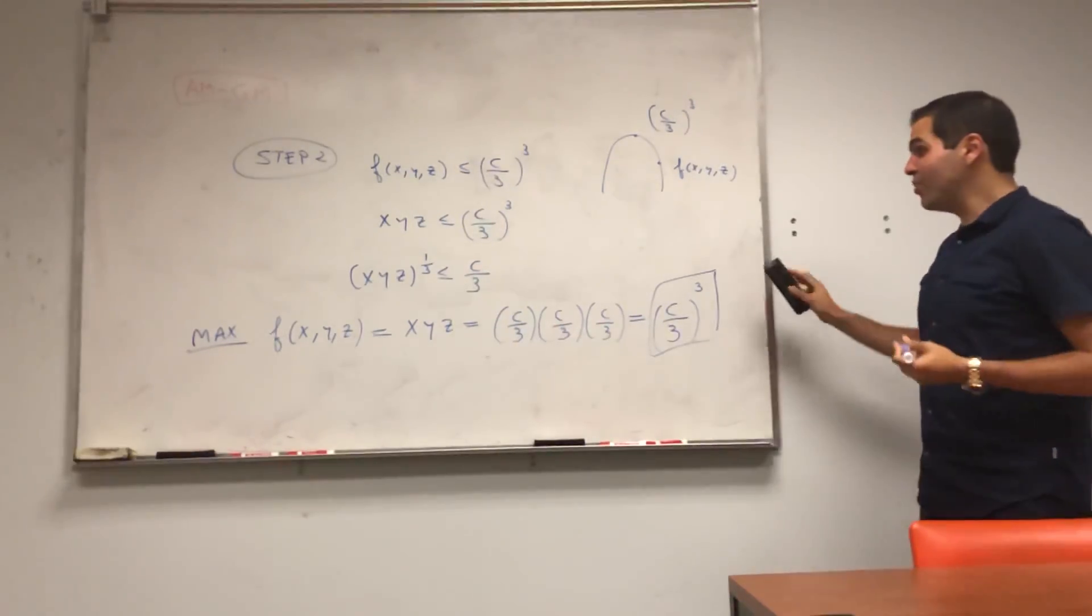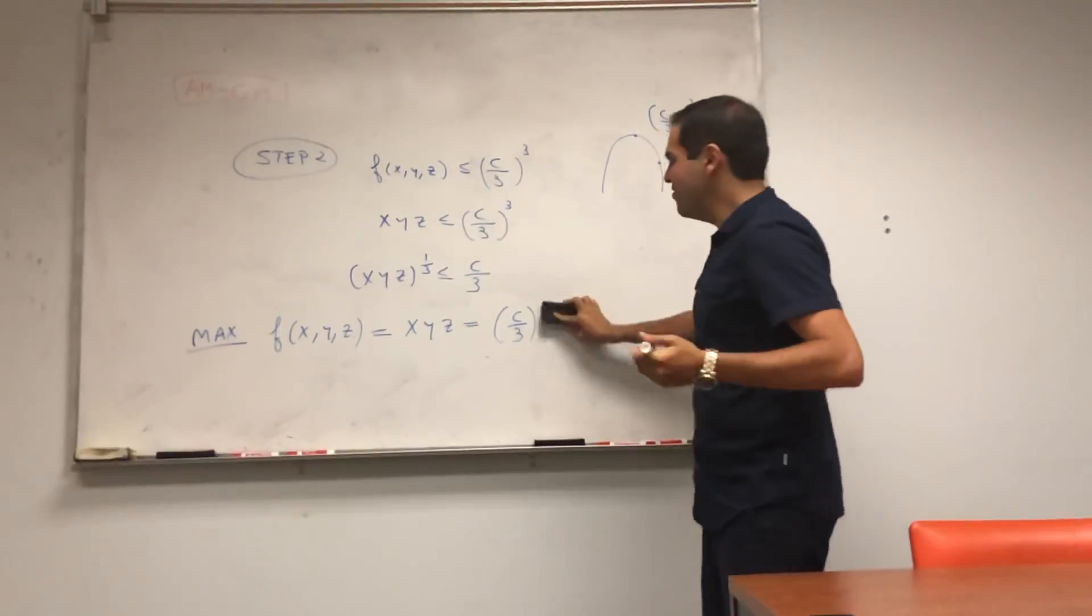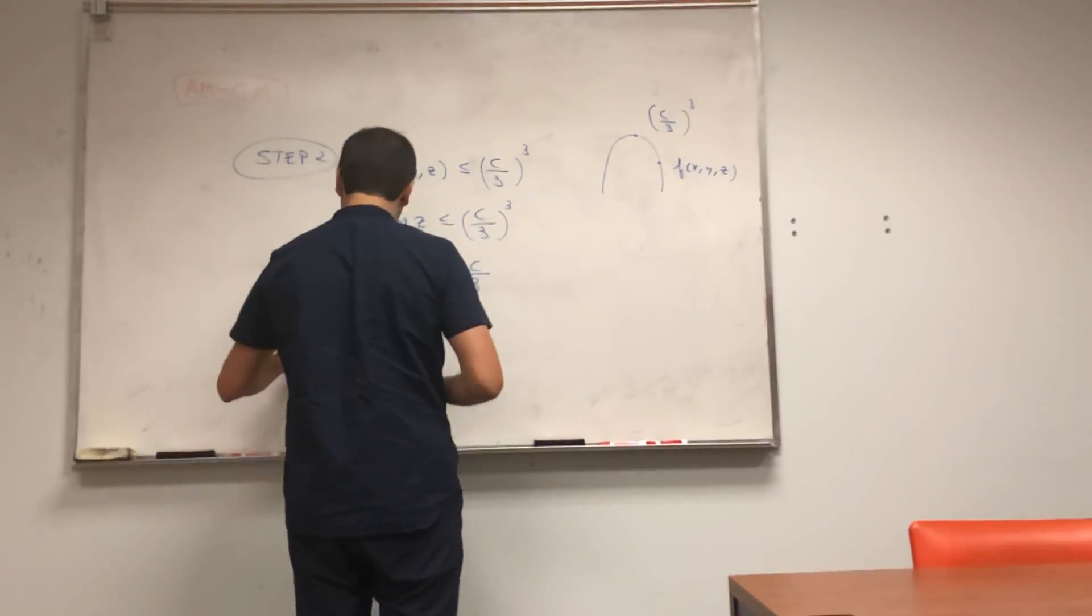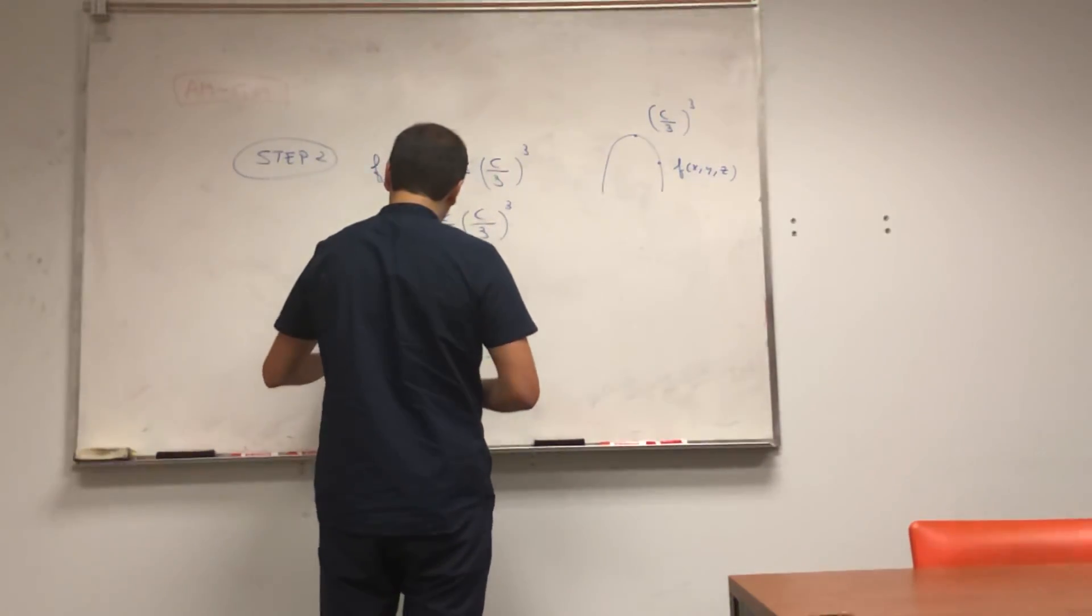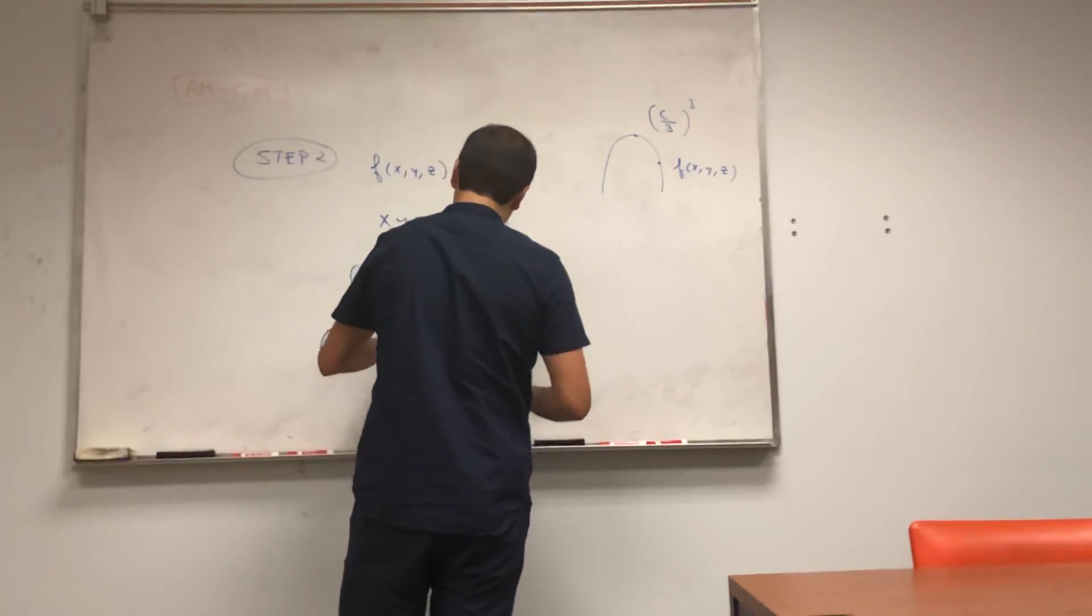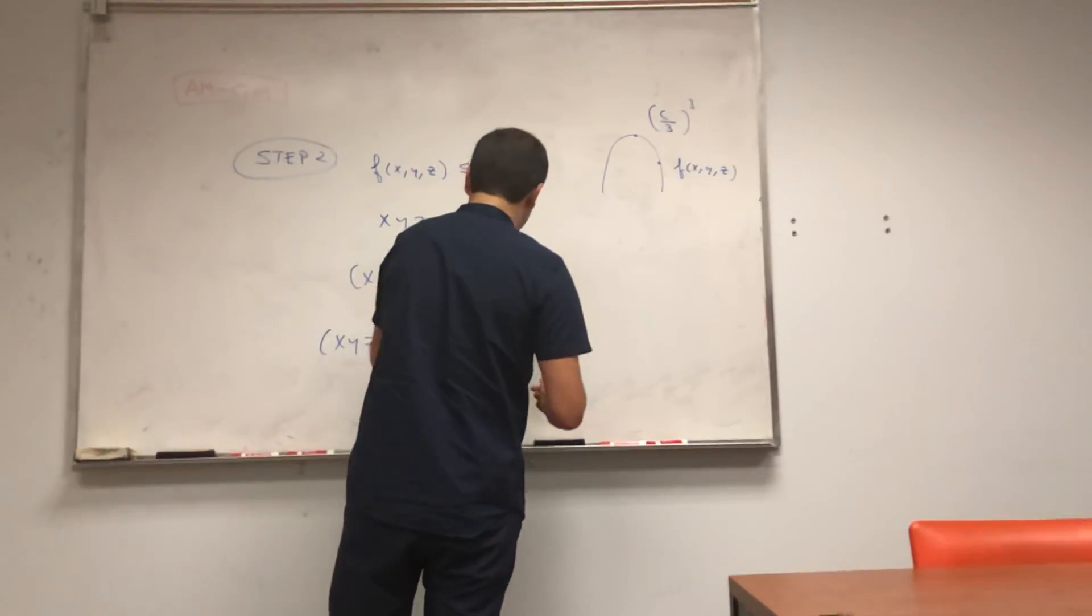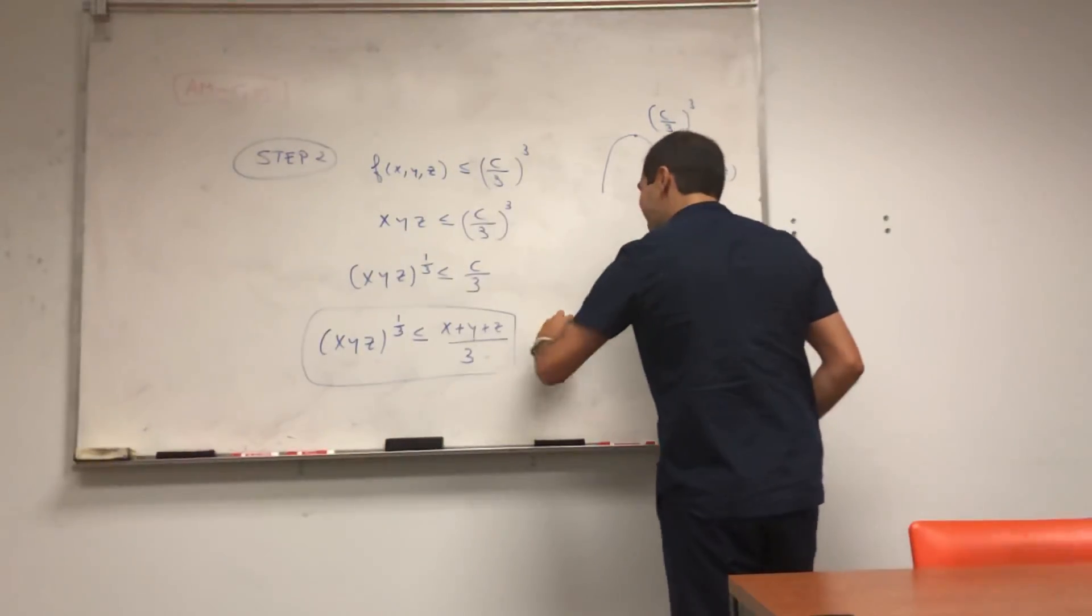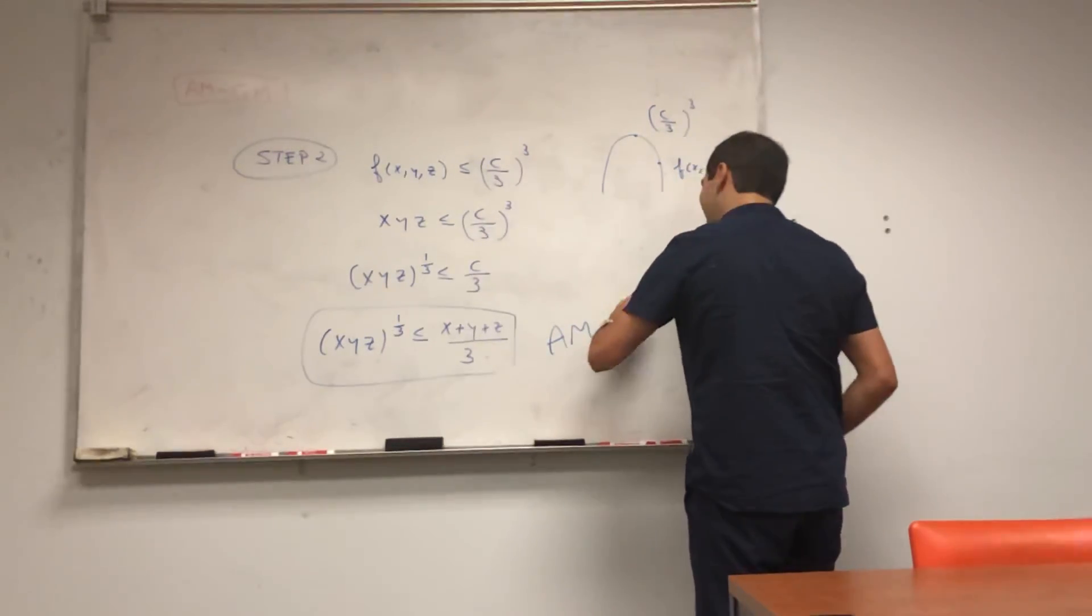And we're almost done. Because what was c? Remember, c was just x plus y plus z. So we get the cube root of x, y, z is less than or equal to x plus y plus z over 3. Which is, ding, ding, ding, our arithmetic geometric mean inequality.